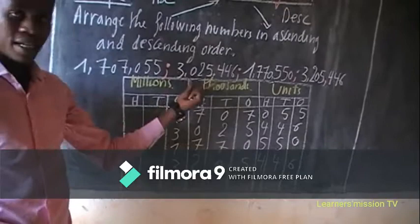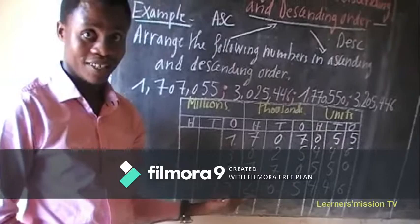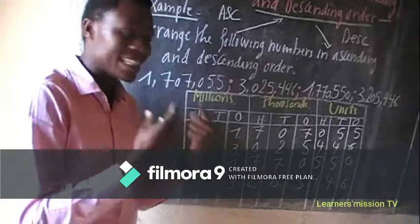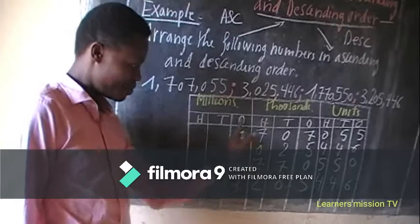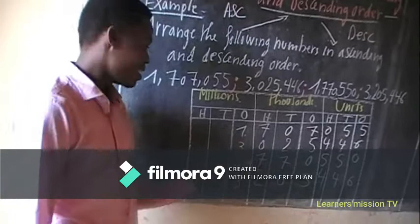After writing those numbers, you are going to name them. I want to name them, then I am going to see the highest number. You see that all numbers are having a digit in the millions column. I am going to compare them.